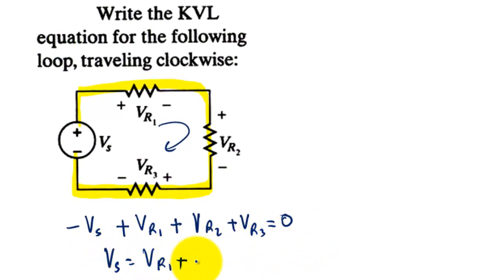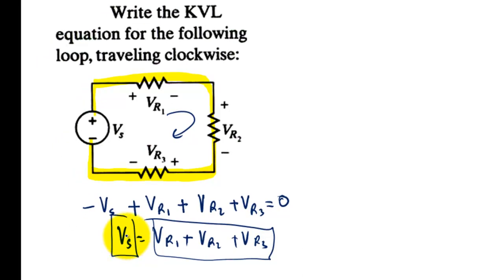This means that VS is equal to VR1 plus VR2 plus VR3. The voltage applied is equal to the sum of the voltage drops. This is also the KVL, or the sum of all the voltages is equal to zero.